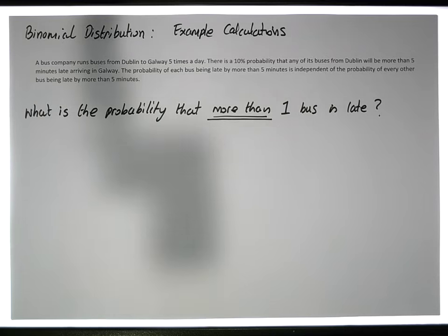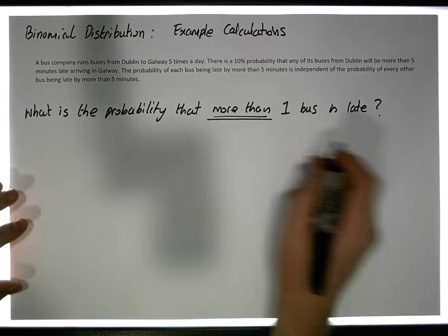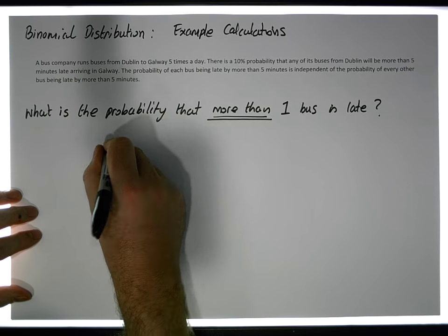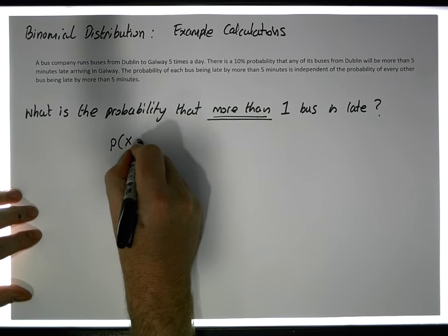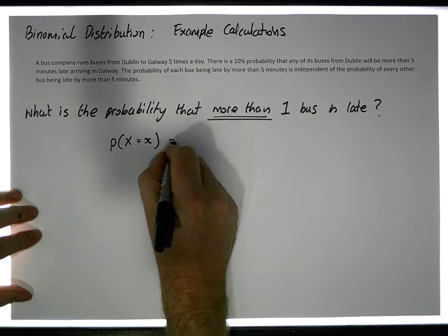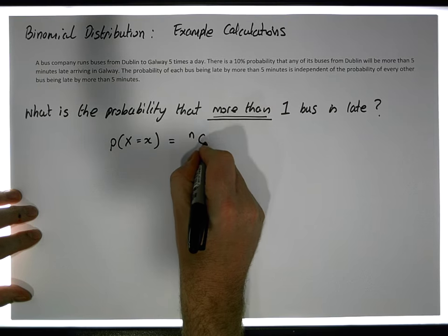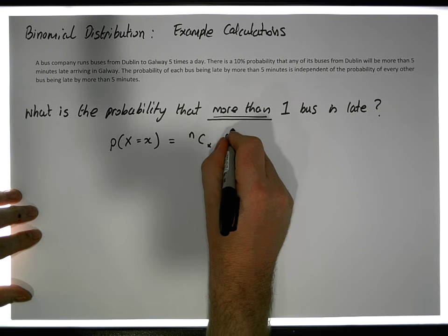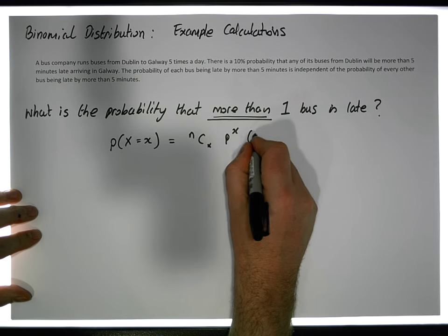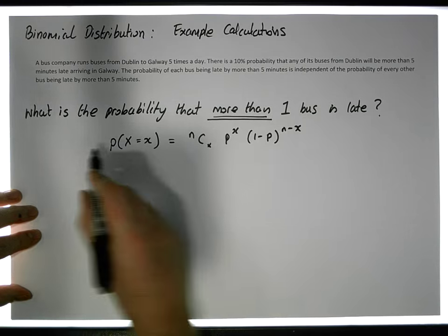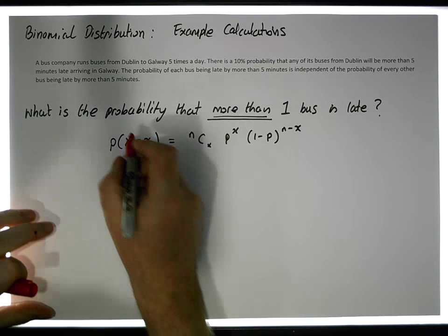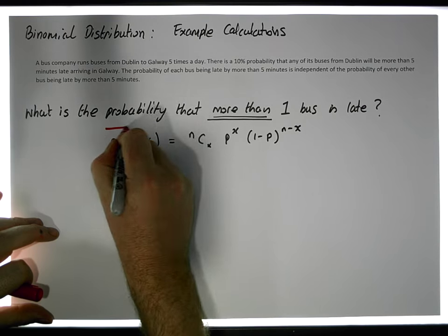These are what's known as binomial probabilities, and we have a formula that allows us to calculate them. The formula says that the probability that your binomial experiment takes on a specific value is equal to NCX times P to the power of X times (1 minus P) to the power of n minus X. It's a formula — don't have a heart attack when you see it.